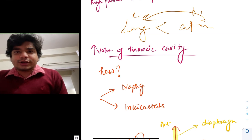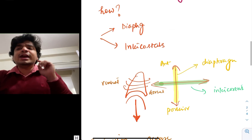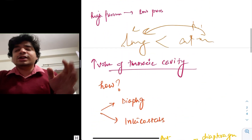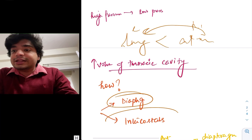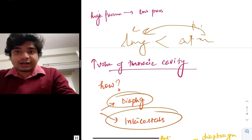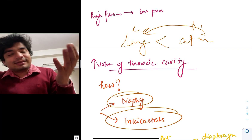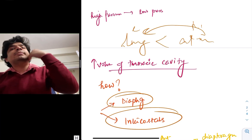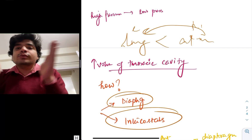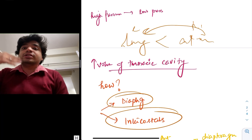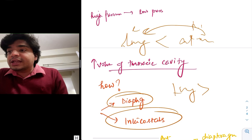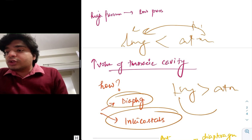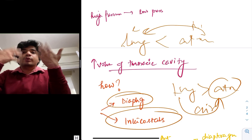Expiration is exactly the opposite. The muscles which contracted — diaphragm contracted, intercostals contracted — they will relax and the air will be thrown out. Because the volume will decrease, the pressure will increase; the pressure in the lung will increase more than that of the atmosphere, so air will flow from the lungs to the atmosphere outside.